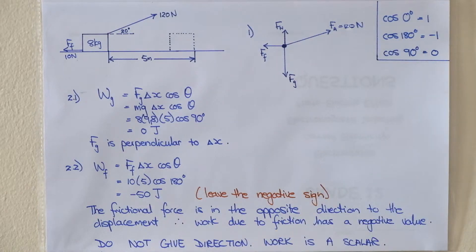So cos of 180 is negative 1. From our little list to remember, 10 times 5 is 50. So we get an answer of negative 50 joules. Leave your answer with a negative sign. Don't change it to positive. And do not give direction. Work is a scalar. It does not have direction.